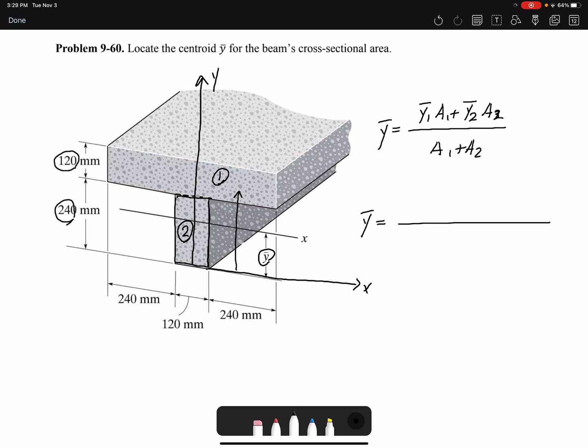Now the area: the area is simply the width multiplied by the length. The width is 120 and the length is 240 plus 120 plus 240, so 600.